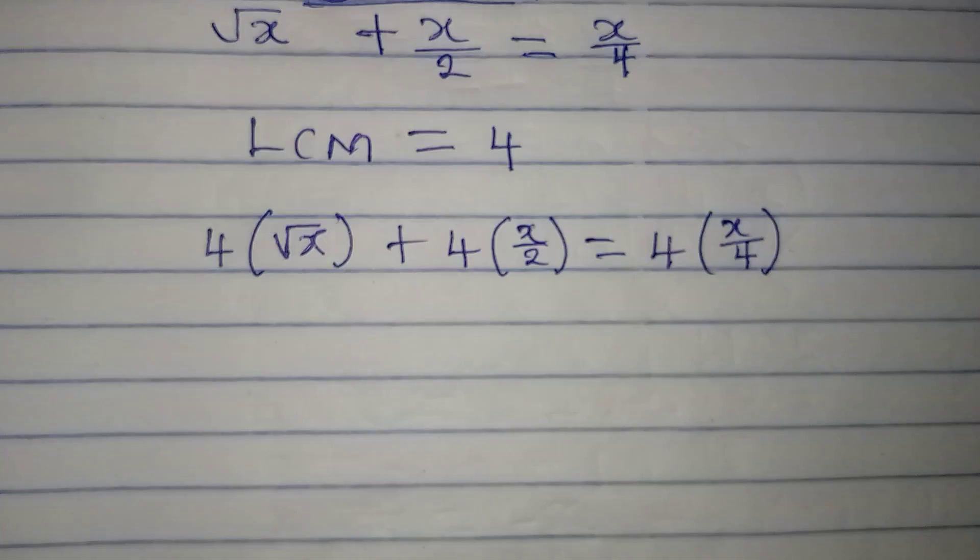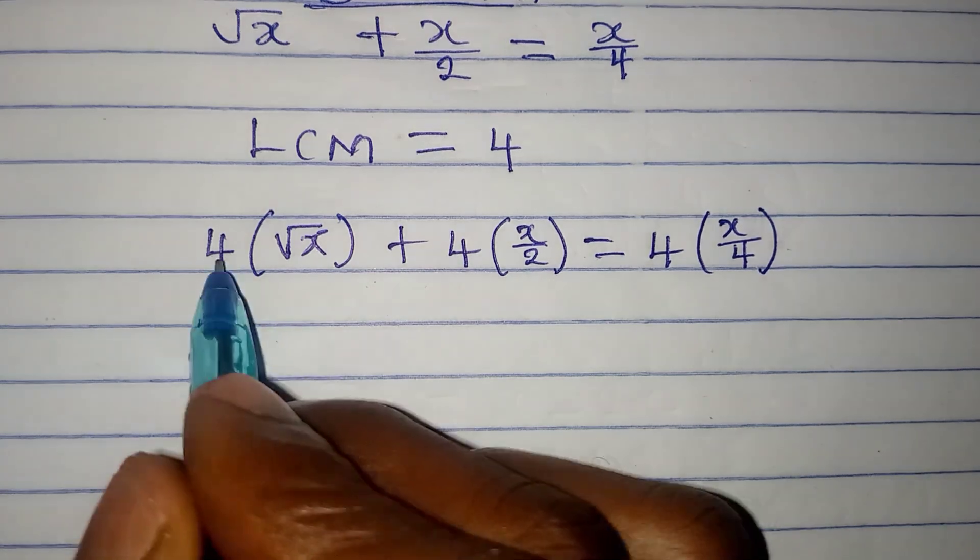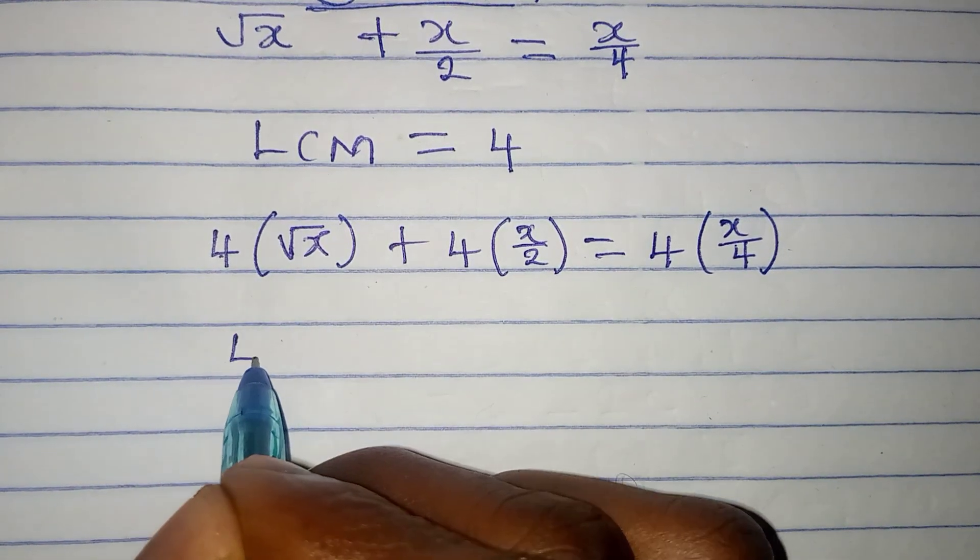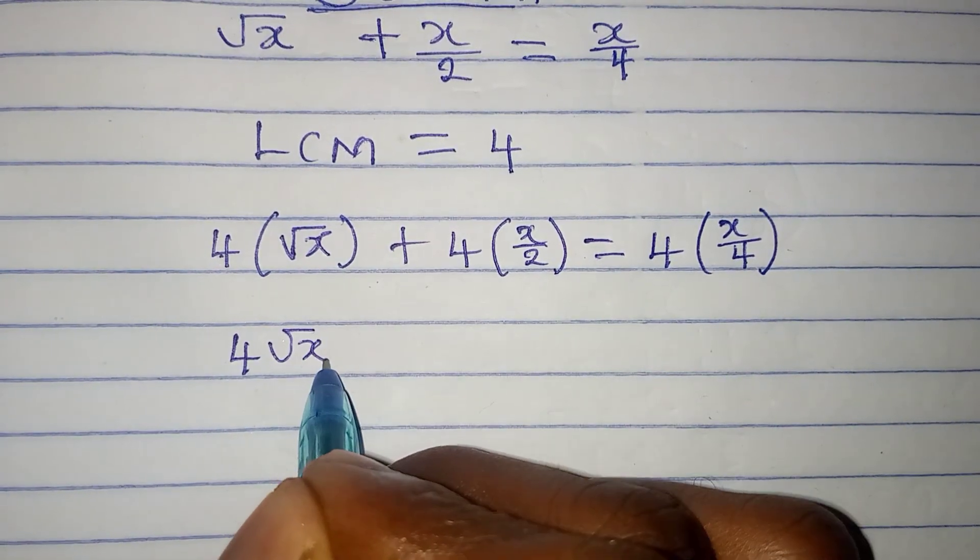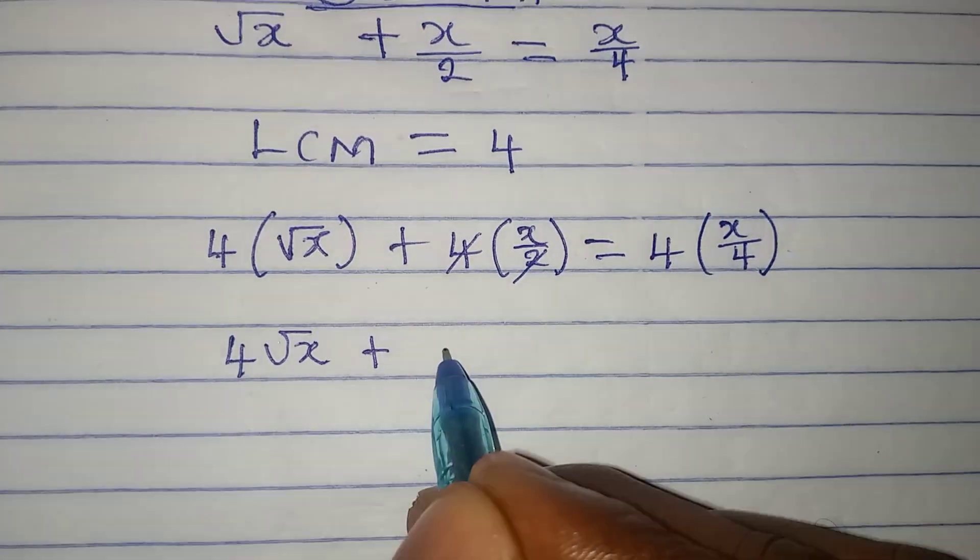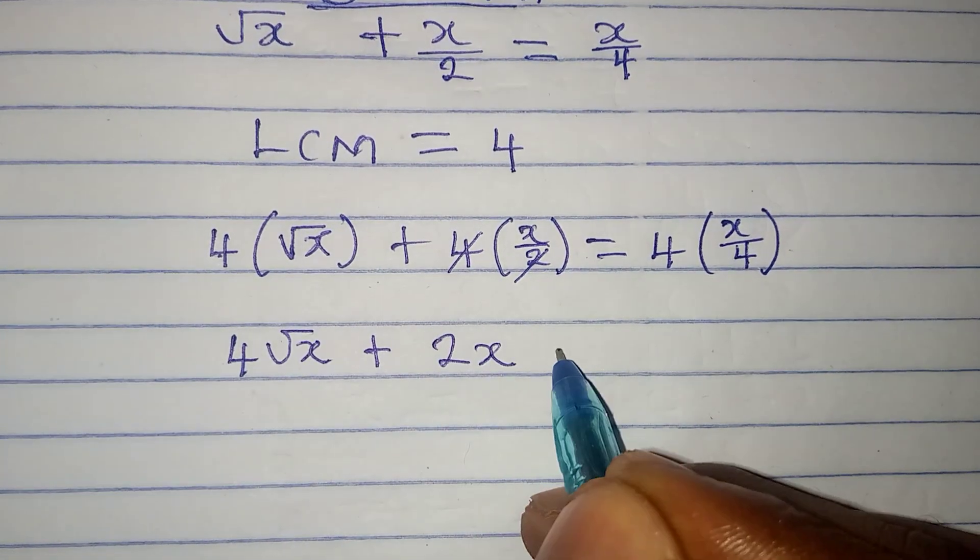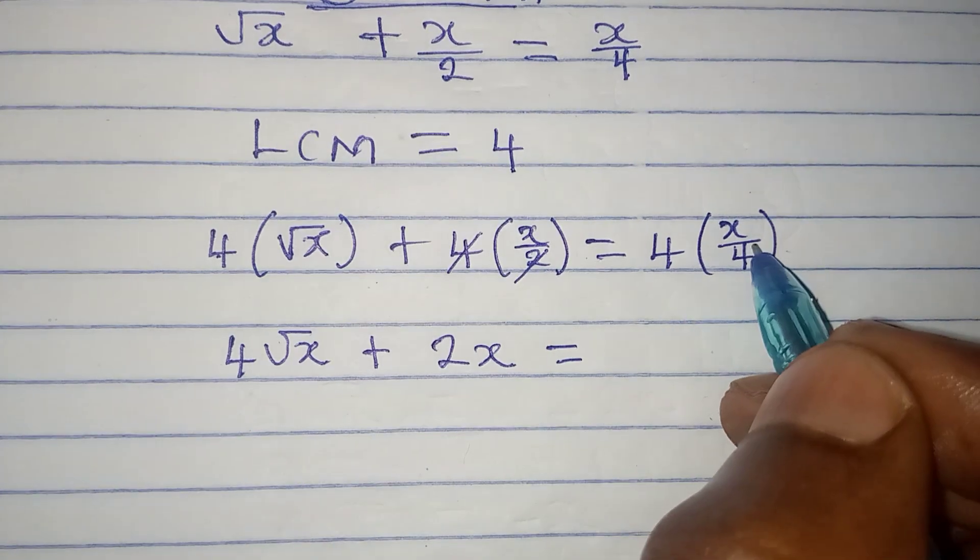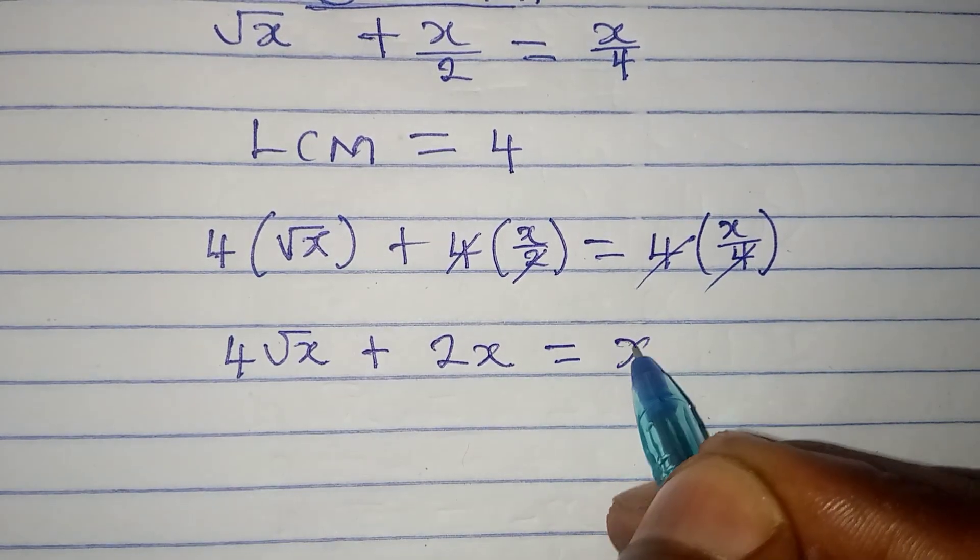Now the next step is to open this bracket. 4 times root x will have 4 root x plus 2 will go there 2 times and we'll have 2x. This is going to be equal to 4 cancels 4 and we'll have x.